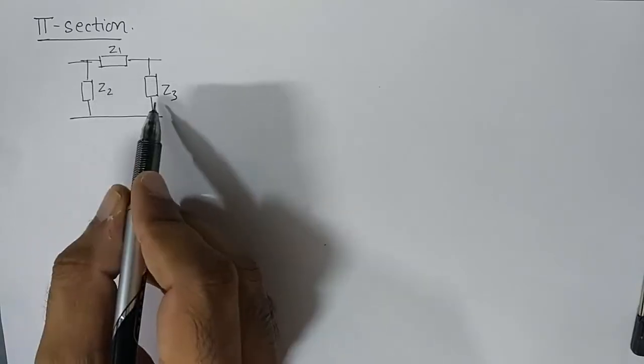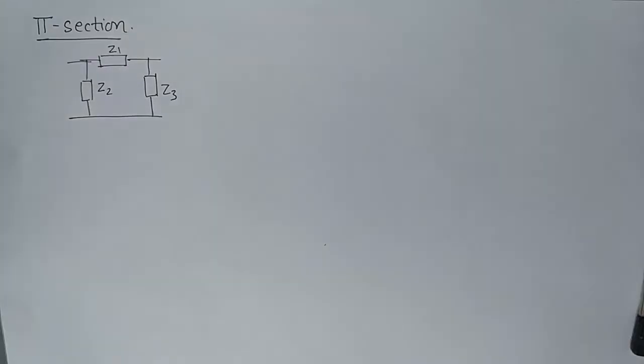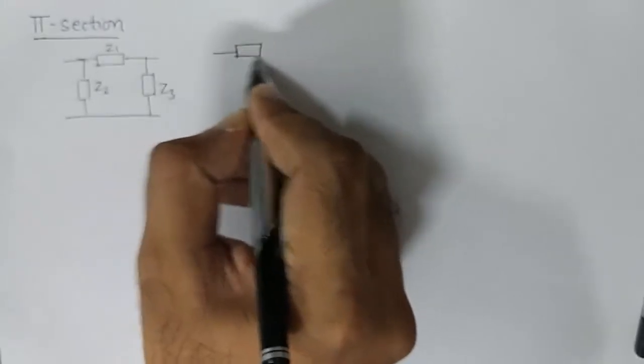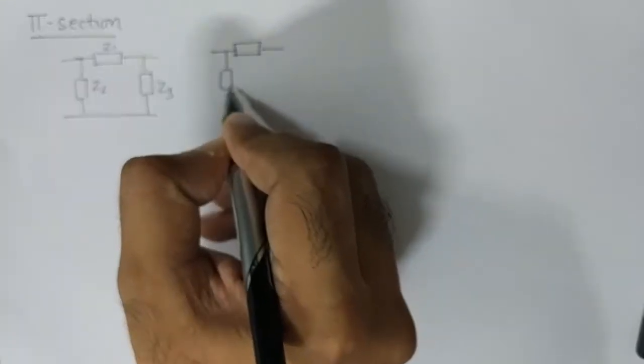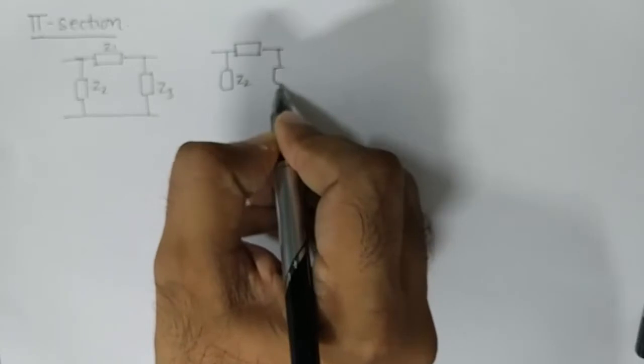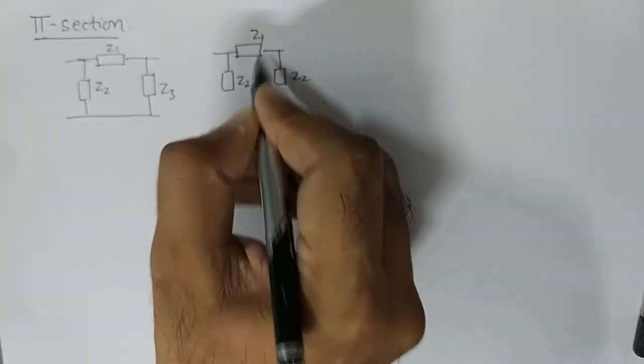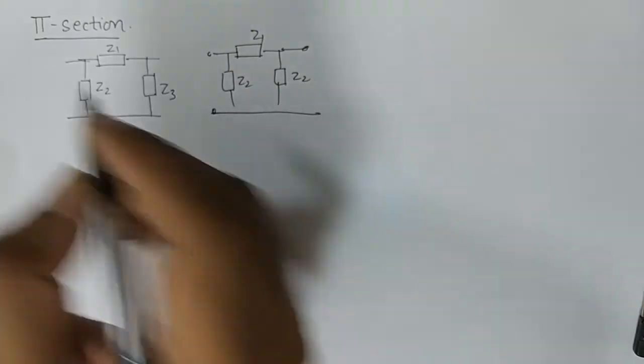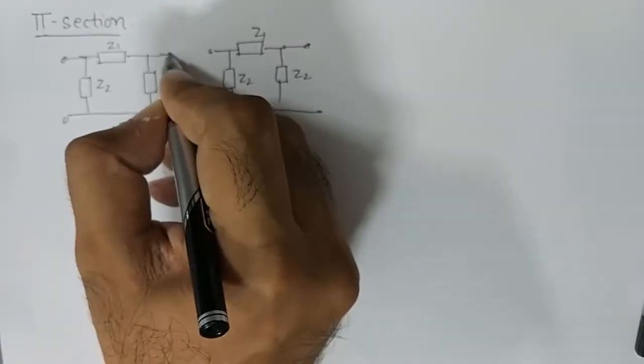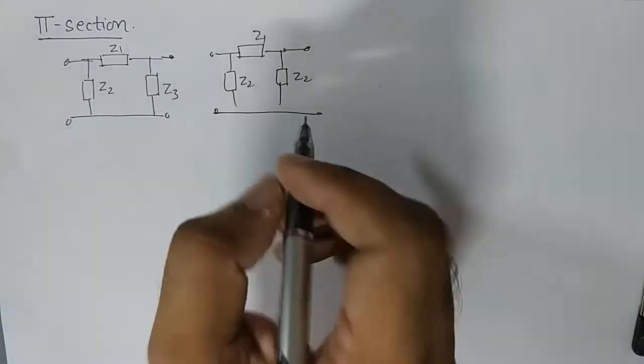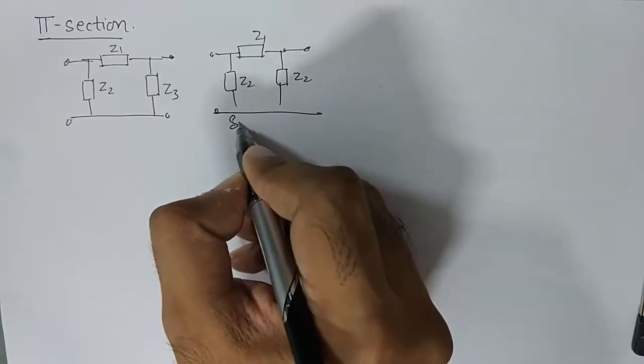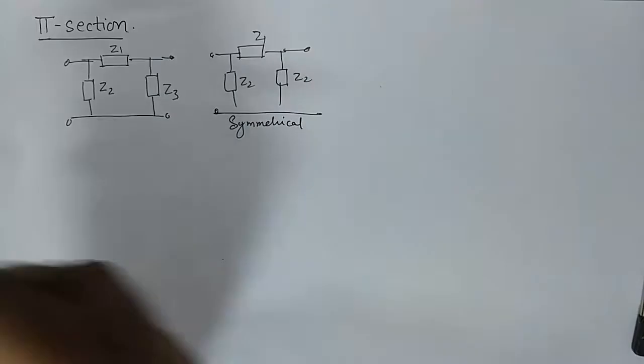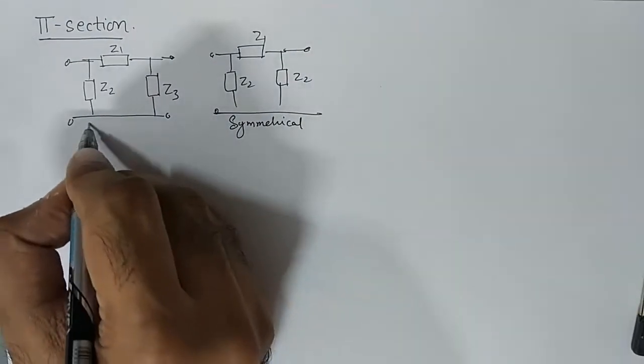Now over here Z2 is not equivalent to Z3, and if I make Z2 to be equivalent to Z3 then this kind of network will be known as symmetrical and this is asymmetrical.